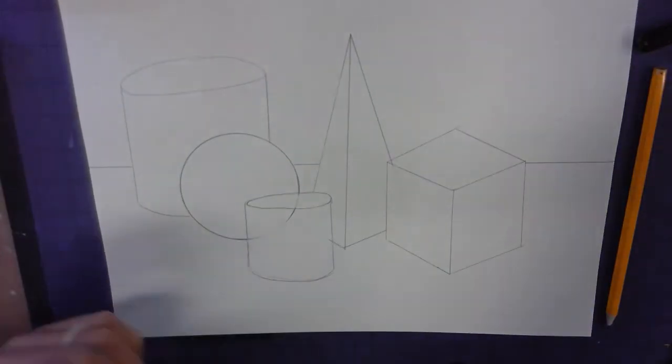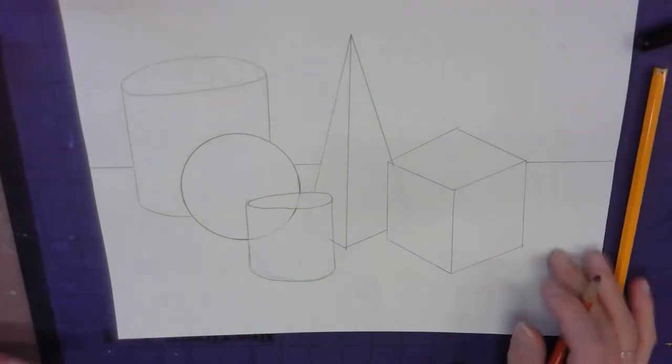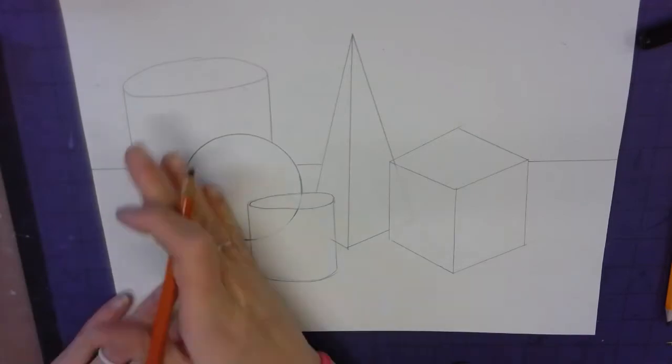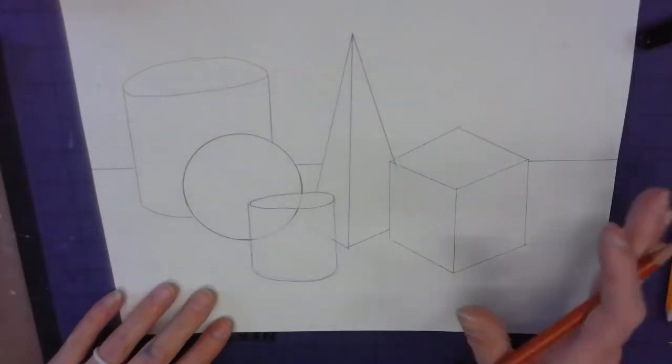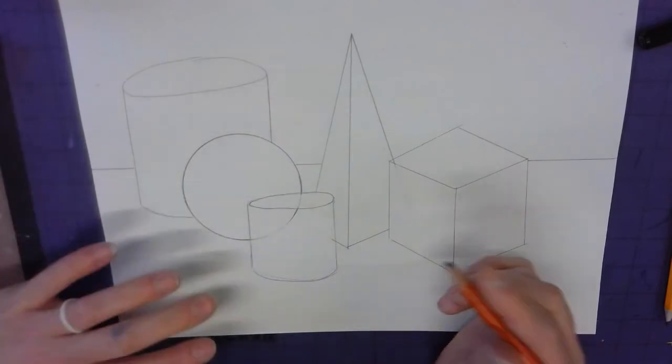From here, we use the charcoal pencils. You need to decide which way the light is shining on your piece. So if the light is coming from the left side, I want my shadows to go this way. My light is shining from the right side, I want my shadows to go this way. I'm going to have my light coming from the left.